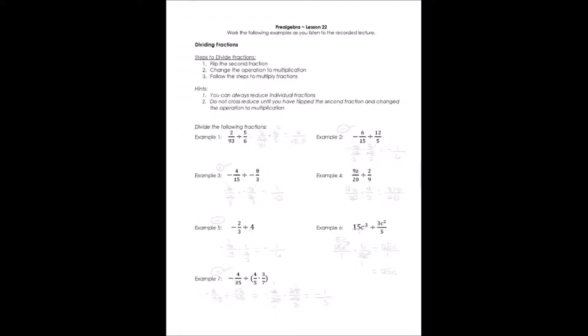Let's take a look at example one, which says 2/93 divided by 5/6. First, we're going to change it to multiplication by saying 2/93. In other words, the first fraction has to stay the same. It cannot change. We change the operation to multiplication, and we invert or flip the second fraction.